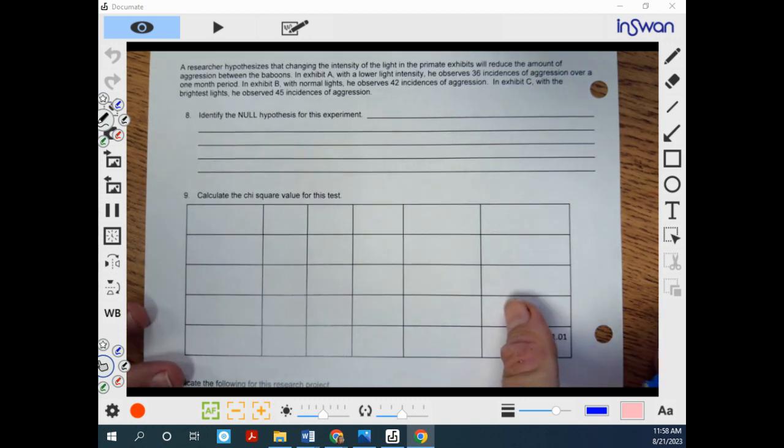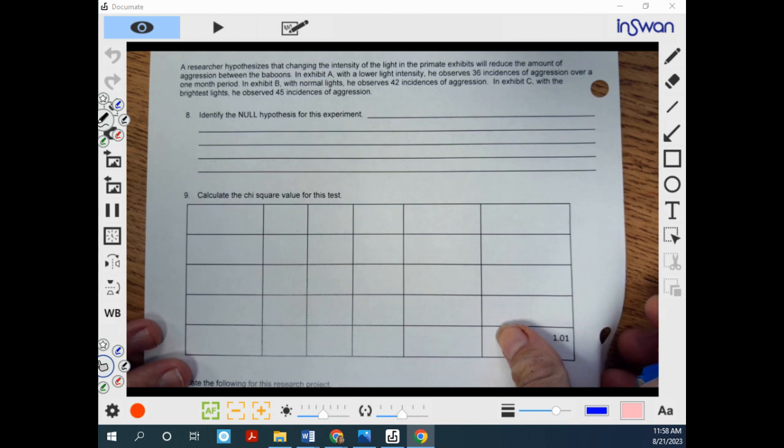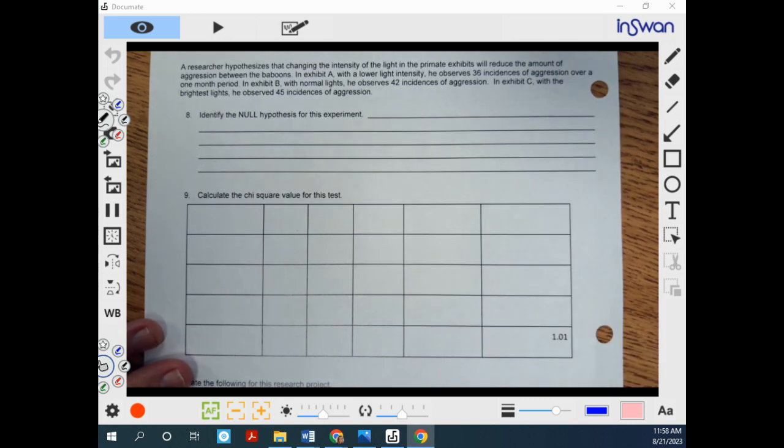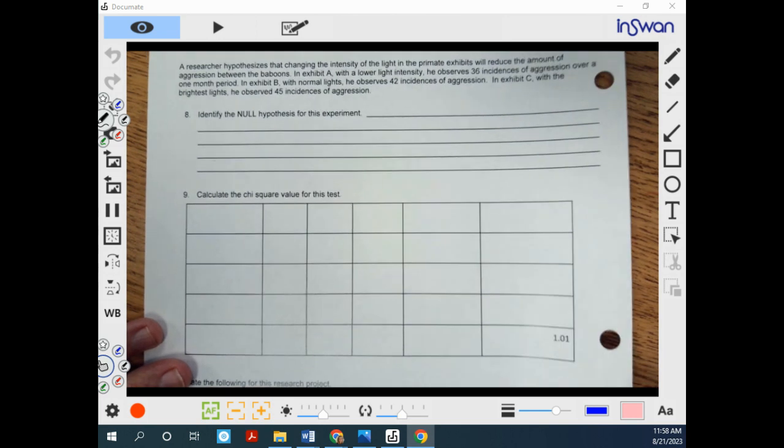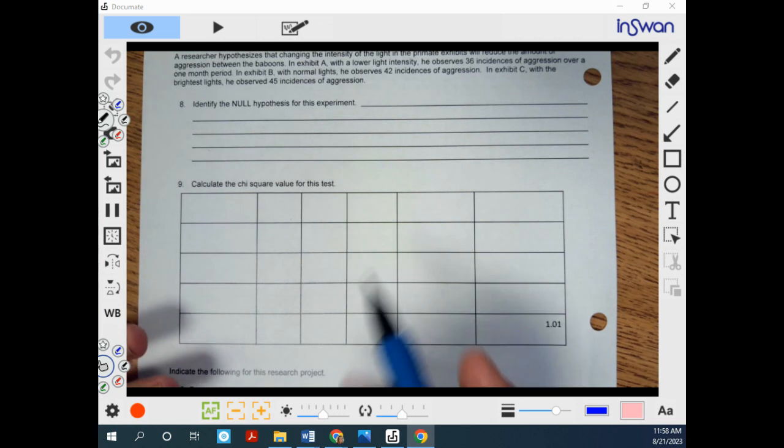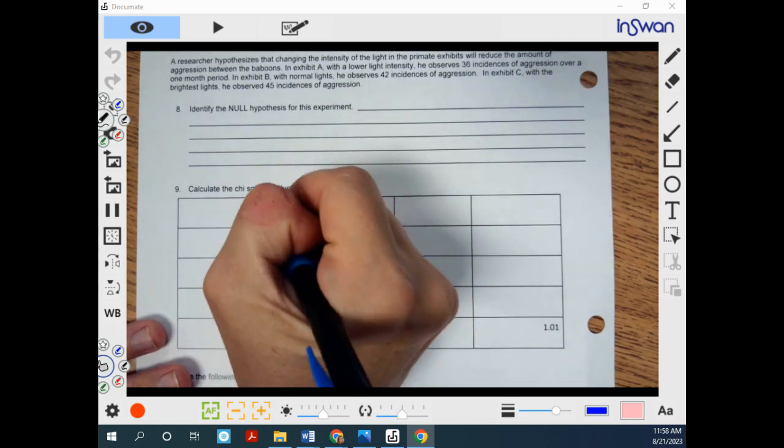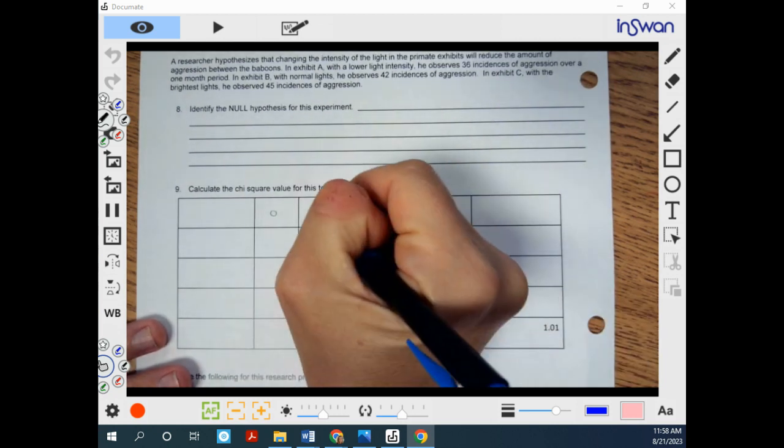Now, if we're going to do a chi-square test to help us determine if changing light intensity is significantly affecting the incidences of aggression, then we're going to think back to our formula. And again, we need O and E.